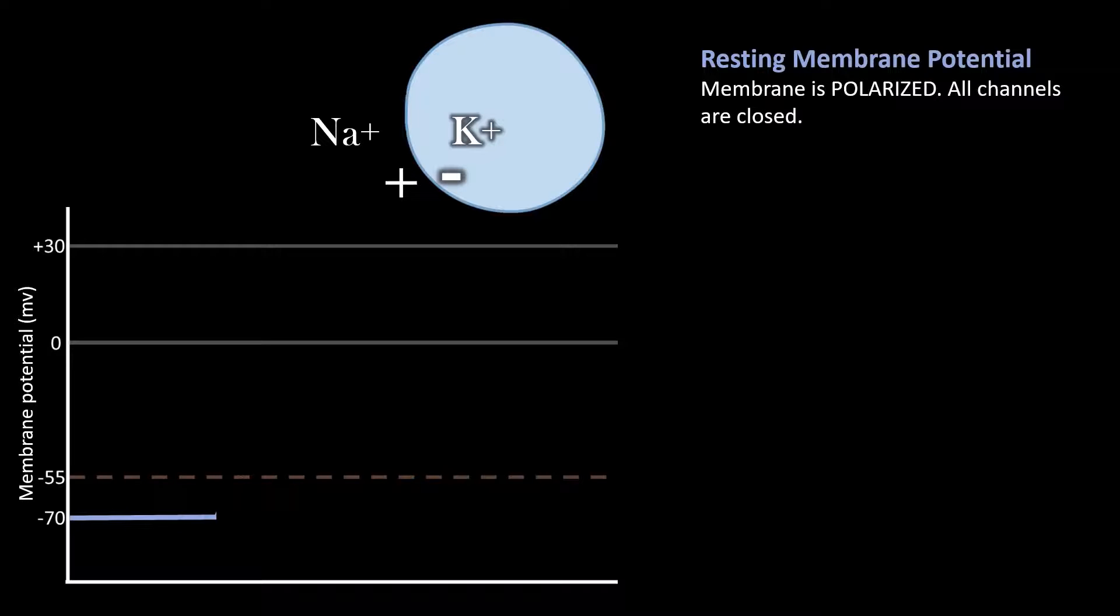So at rest, we say the cell membrane is polarized because there is a difference between the charges and things that are polar are different. So at this point, all the channels are closed.